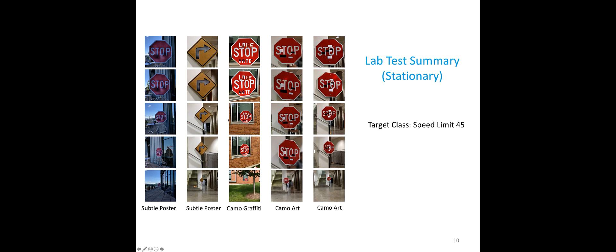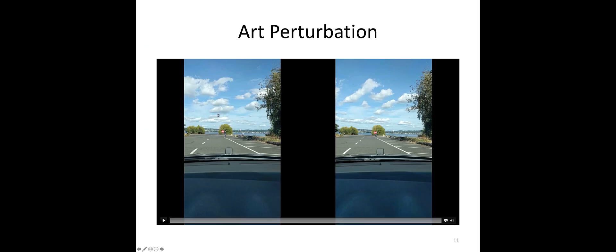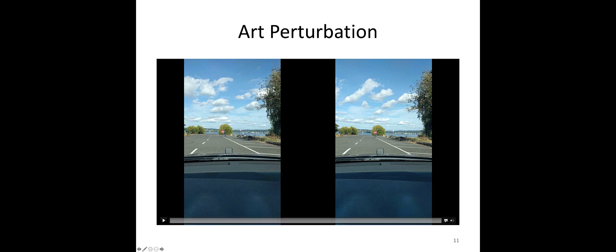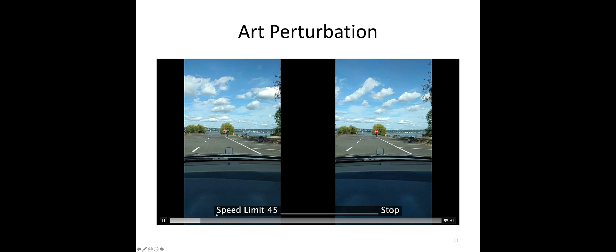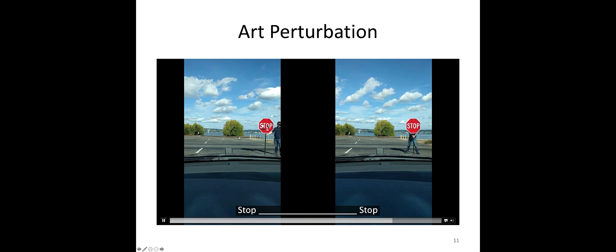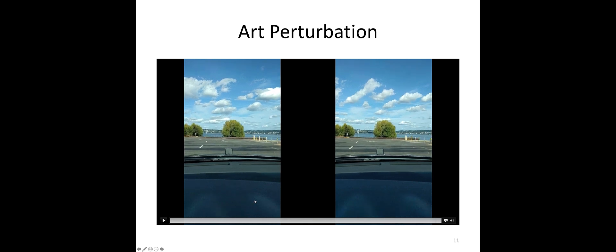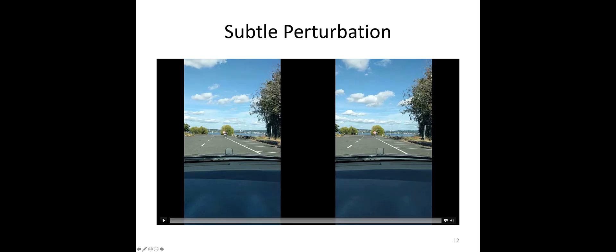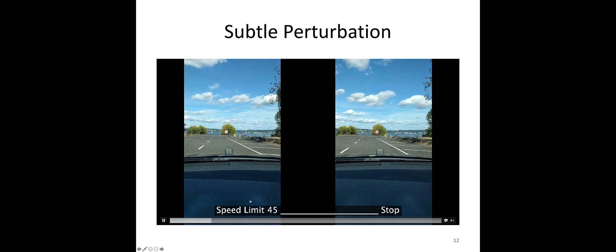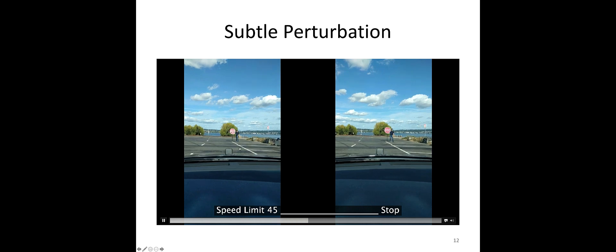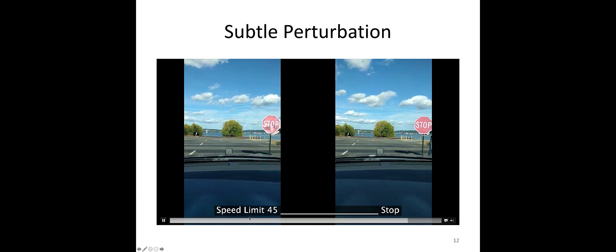This is interesting in the static environment. Now let's look at examples in the dynamic environment. On the left-hand side is the adversarial generated stop sign; on the right-hand side is a control experiment with a vanilla stop sign. When the car drives by, the adversarial stop sign is consistently recognized as a speed limit sign 45, while for different types of generated adversarial stop signs, we observe similar phenomena — the stop sign is consistently misrecognized as a speed limit sign — while the control experiment is correctly recognized.